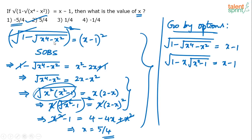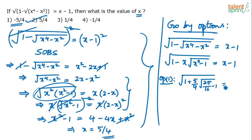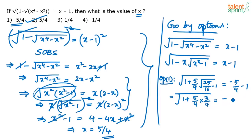Let's go by option 1: x equals minus 5 by 4. Substituting: minus of minus 5 by 4 becomes plus 5 by 4. And 5 by 4 squared is 25 by 16 minus 1 equals 9 by 16, and the square root is 3 by 4. So the left-hand side gives root of 1 plus 5 by 4 times 3 by 4, which is a positive value. But the right-hand side is minus 9 by 4, which is negative. A positive term cannot equal a negative term, so option 1 is eliminated.